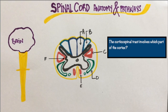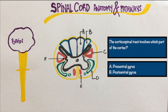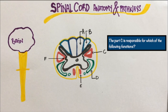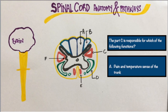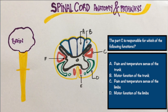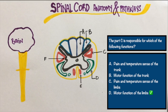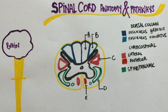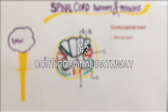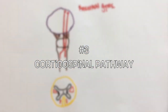Question 5: The corticospinal tract involves which of the following parts of the cortex? Option A, precentral gyrus. Option B, postcentral gyrus. The correct answer is precentral gyrus. Question 6: The part C is responsible for which of the following functions? Option A, pain and temperature sense of the trunk. Option B, motor function of the trunk. Option C, pain and temperature sense of the limbs. Option D, motor function of the limbs. The correct answer is motor function of the limbs. This is the corticospinal tract. Unlike the other two pathways we spoke about, this pathway is descending, which means it originates from the brain and then comes down to the spinal cord. That's why it's called the corticospinal tract.